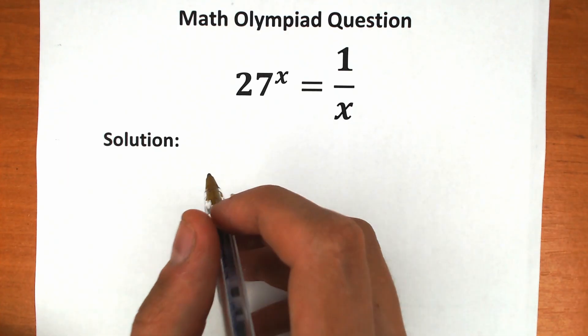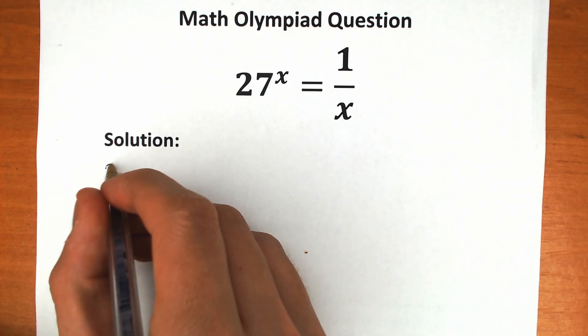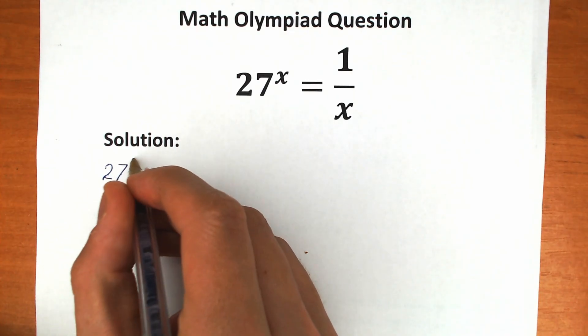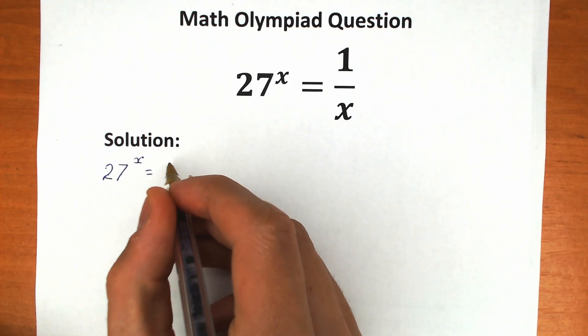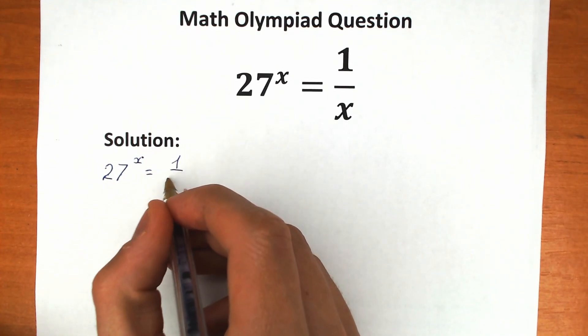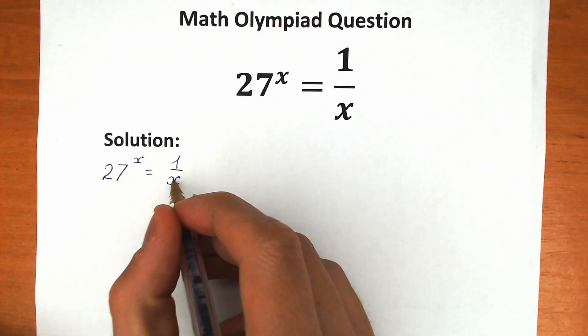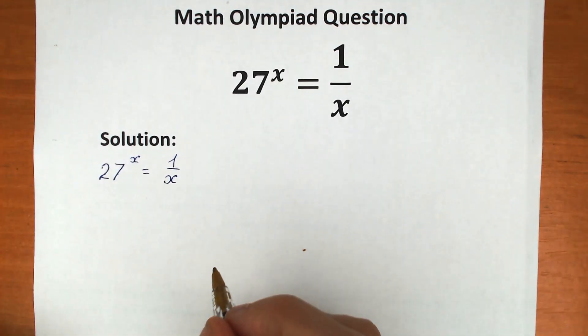First of all, let's rewrite this question right here. So we have 27 to the power x equal to 1 over x. And right now I'm going to show you a really great trick — how we can simplify this expression a lot.